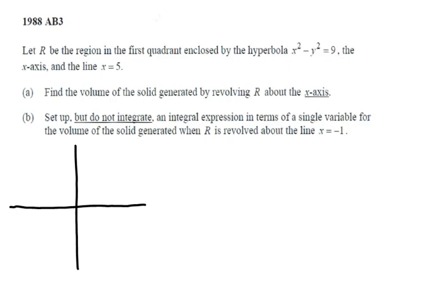So we have this hyperbola, x² - y² = 9. And we're working in the first quadrant, so we only need that part to the right of the y-axis and above the x-axis. It is a standard hyperbola centered at the origin with its vertex at x = 3.